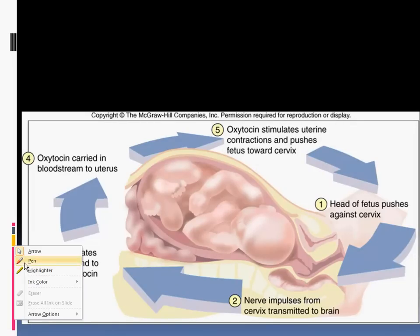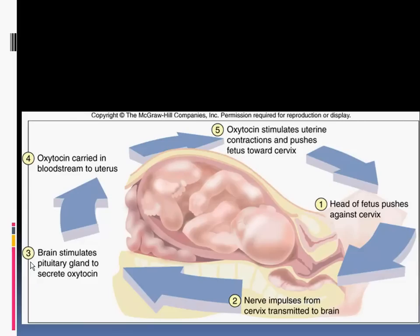So one more time, this positive feedback loop, very simple. If we start at number one, the head of the fetus against the cervix. This is what initiates it. This sends a nervous message back up to the brain. The brain is going to release oxytocin from the posterior pituitary gland. So the brain makes it, but the posterior releases it. Oxytocin is a hormone, carried in the bloodstream, going to target the muscular wall of the uterus, and it's going to cause uterine contractions. These contractions are going to push the baby down, which is going to cause increased pressure on the cervix, which will cycle back and cause an increased amount of oxytocin to be released.